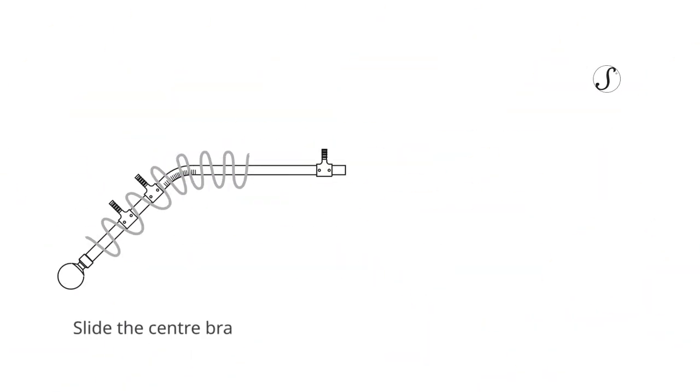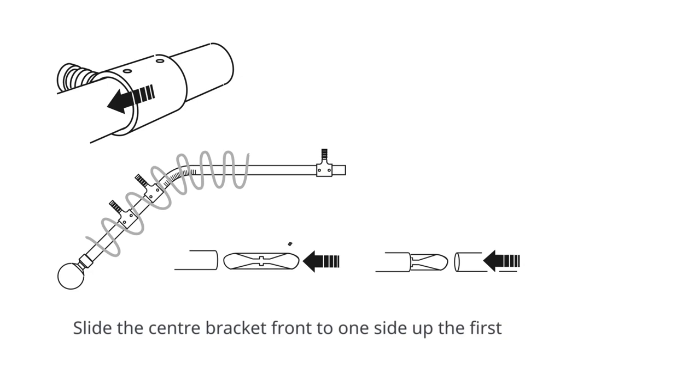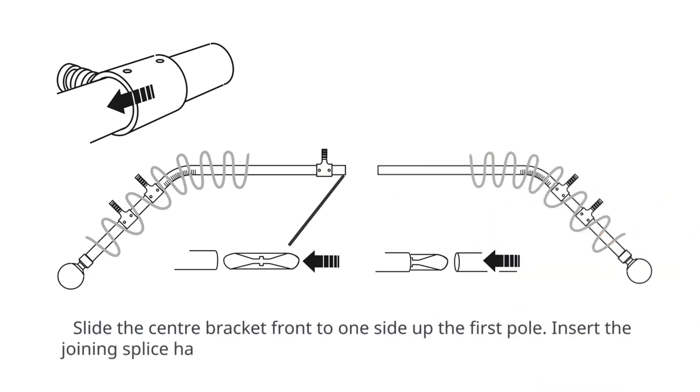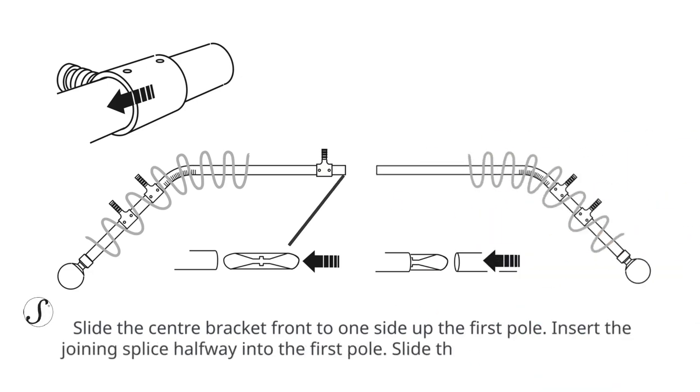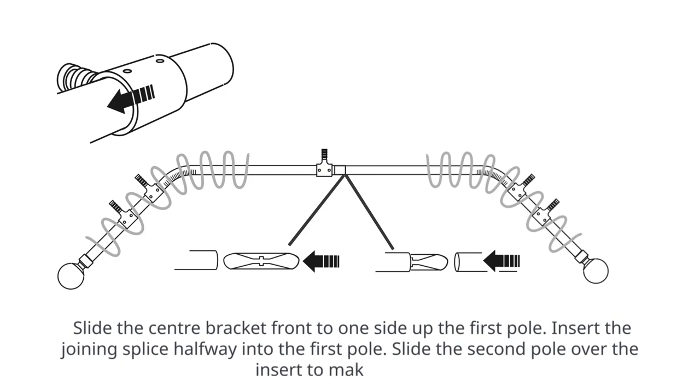Hanging the bay pole. Slide the center bracket front to one side up the first pole. Insert the joining splice halfway into the first pole. Slide the second pole over the insert to make the join.